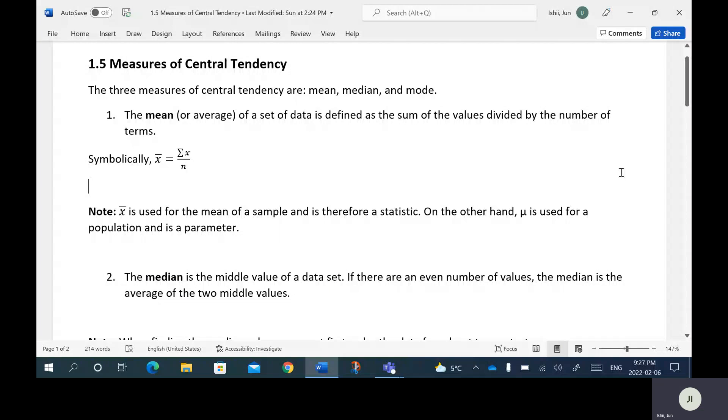Alright, so in this next lesson we're going to be looking at something called measures of central tendency. When it comes to measuring central tendency, there are three measures: mean, median and mode. So perhaps you guys have heard this before, but anyways, it's going to go through each one of these three. The first one is the mean.